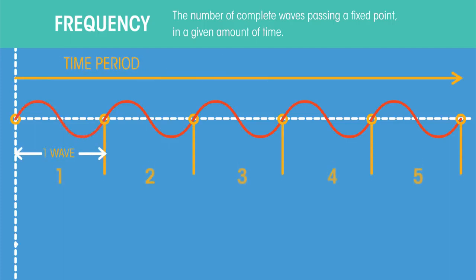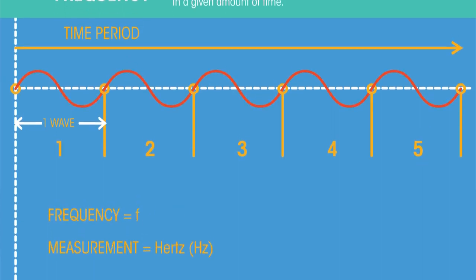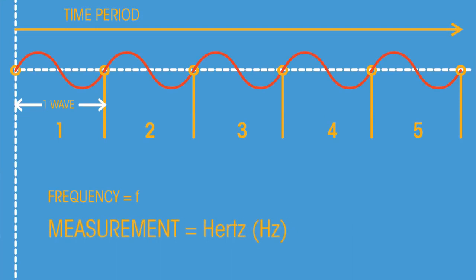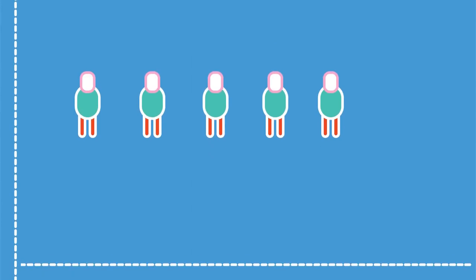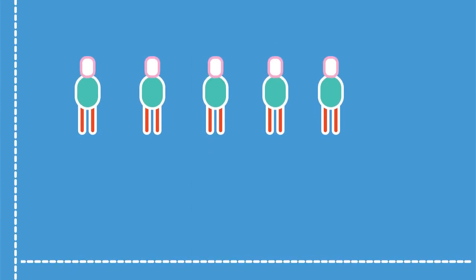So if this was our time period, the frequency would be five. Frequency is given the symbol F and is measured in units called Hertz. Hertz measure how many complete cycles per second. So how many people in our Mexican wave stand up every second.